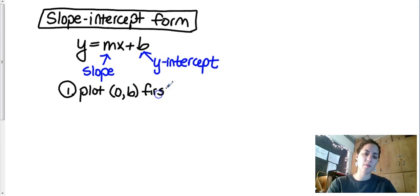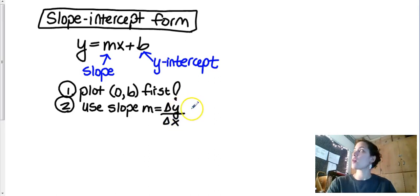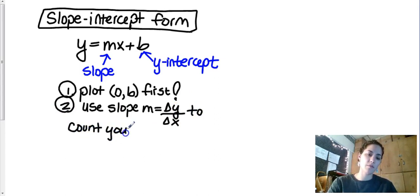So in class we said that first we plot the y-intercept zero comma b whatever that b value is first. And then second we use slope, which is the rate of change change in y divided by change in x to count your way to the next point.